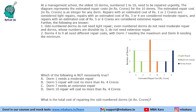Hello everyone, welcome to Aptitude Lab. This set from CAT 2017 Slot 2 DILR says that at a management school, the oldest 10 DOMs numbered 1 to 10 need to be repaired urgently. The diagram represents the estimated repair cost in rupees crores for the 10 DOMs. The estimated repair cost is an integer for any DOM, so in crores.